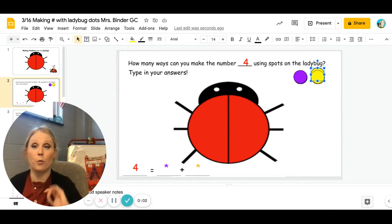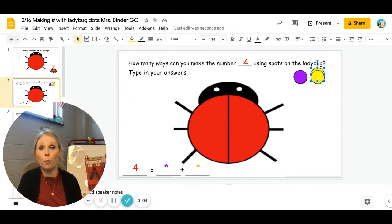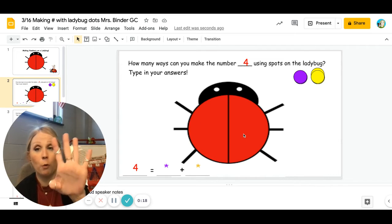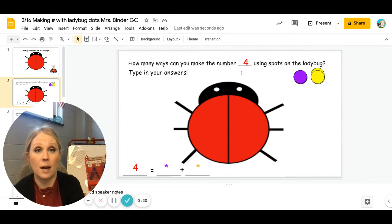Hi, I'm going to show you one way you can show the number four using two different colored counters. I have purple counters and yellow counters. I need to make the total number of dots on the ladybug four. I need four dots total.